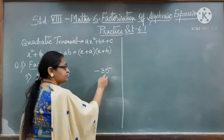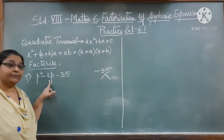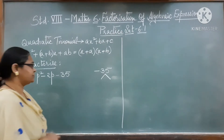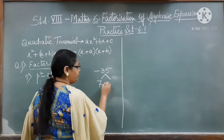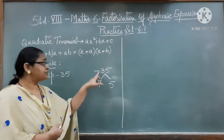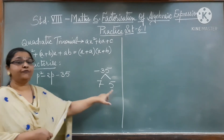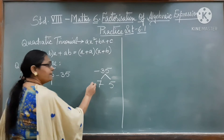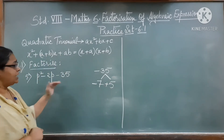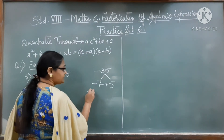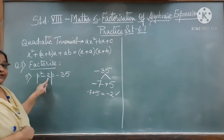Now I have to find out two factors, in such a way that the sum of those two factors should be minus 2 — which is the coefficient of the middle term — and the product should be minus 35. I know 7 and 5 are factors of 35, but I have minus 35 and I need to get minus 2 when I add them. Let me take minus 7 for the larger number and plus 5. Minus 7 plus 5 equals minus 2 — yes, I can use these.